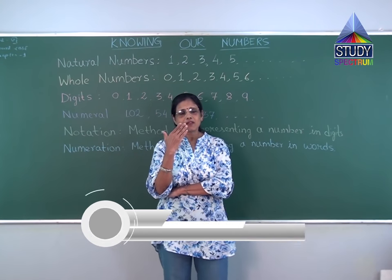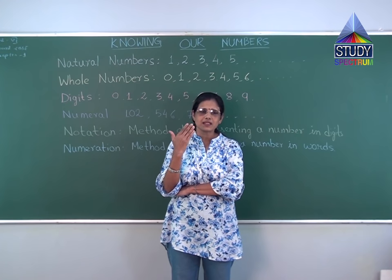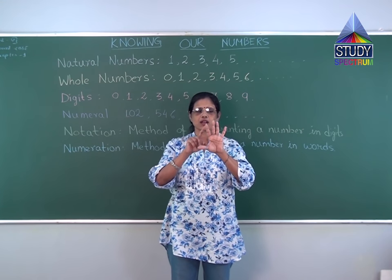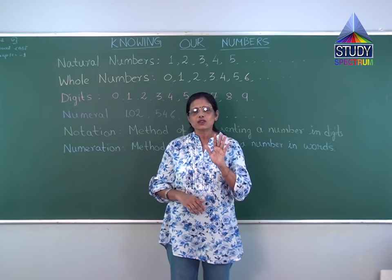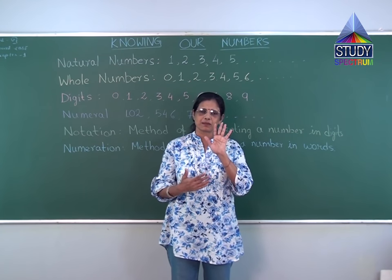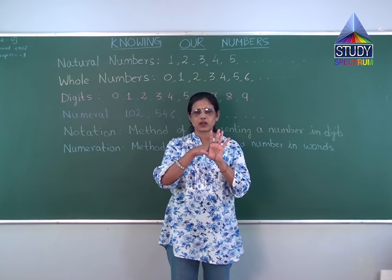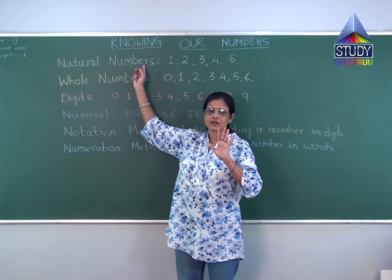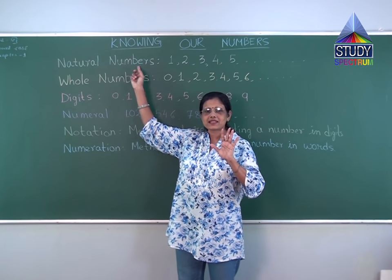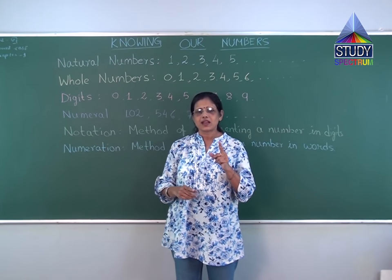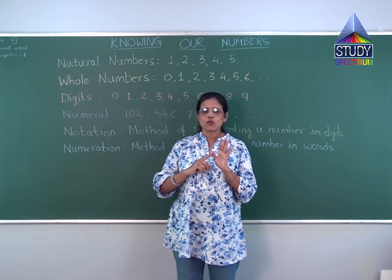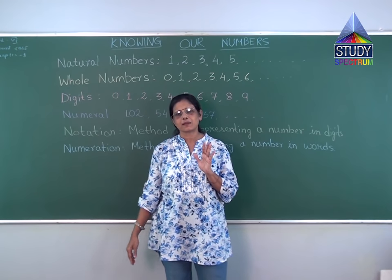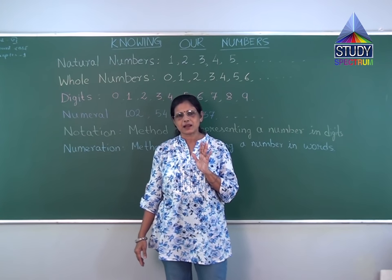First, whenever you start counting naturally — if I say how many fingers are there, you will count one, two, three, four, five. Automatically, naturally, it starts from one. So the first point is natural numbers. Natural numbers start from one and go on unending: one, two, three, four, five, six — counting infinite numbers. These are natural numbers.